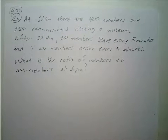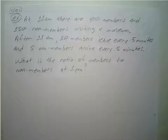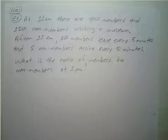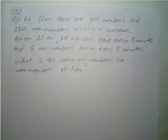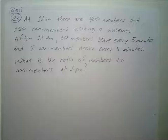At 11 a.m. there are 400 members and 159 non-members visiting a museum. After 11 a.m., 10 members leave every five minutes and 5 non-members arrive every five minutes. What is the ratio of members to non-members at 1 p.m.? Press pause and try to solve this one on your own.